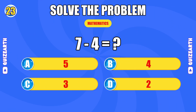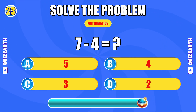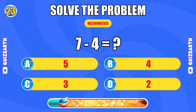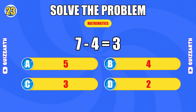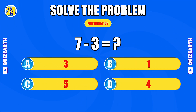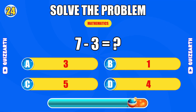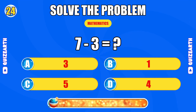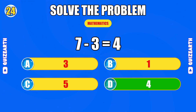How much is seven minus four? Pure speed — the answer is three. What do you get when you subtract three from seven? Razor sharp — the answer is four.